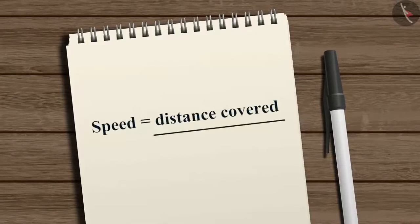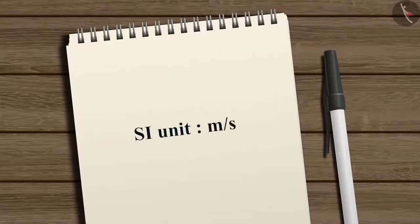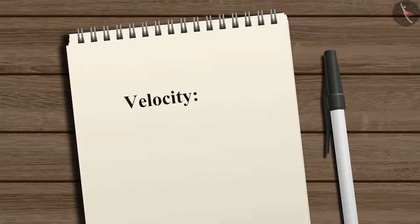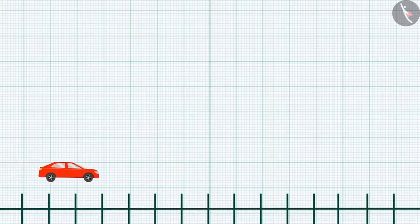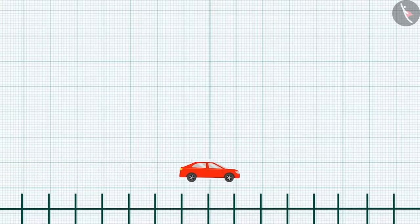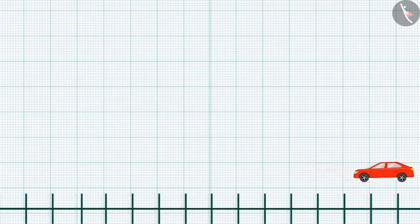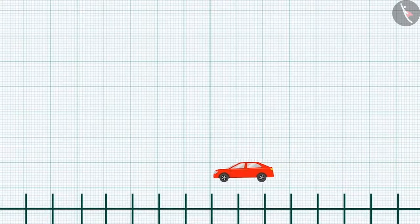Speed equals distance covered divided by time taken. Its SI unit is meter per second. Velocity's SI unit is the same as that of speed, which is meter per second. Velocity also can be uniform and non-uniform.